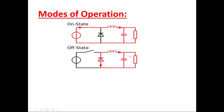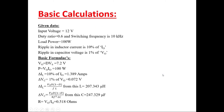These are the basic calculations regarding the buck converter. The input voltage is 12 volts, duty ratio is 0.6, switching frequency is 10 kilohertz, load power is 100 watts, ripple in inductor current is 10% of I₀ (load current), and ripple in capacitor voltage is 1% of output voltage. The basic formula is V₀ = D × Vs.